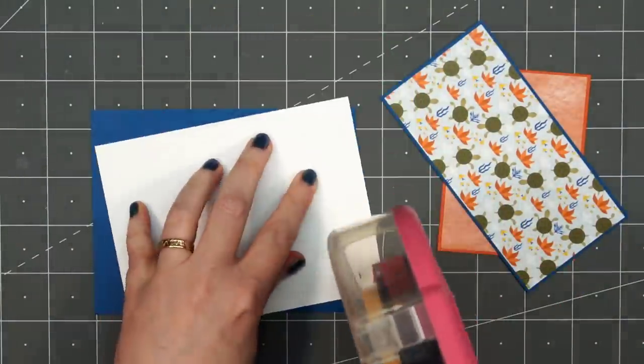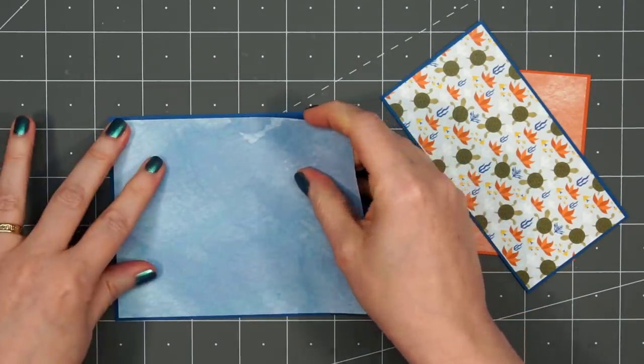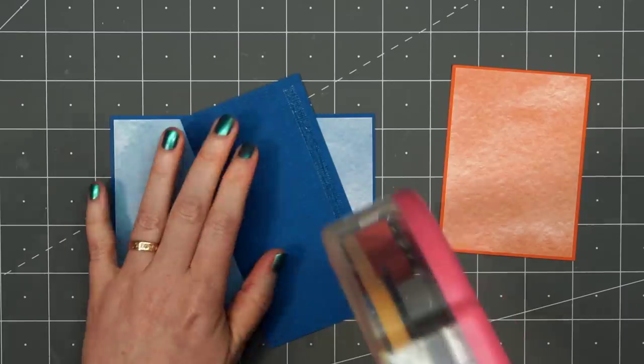For this first card, I'm using two of the Watercolor Whimsy papers. I have this blue paper for the background, layering it on some dark blue cardstock.